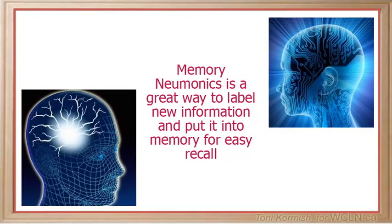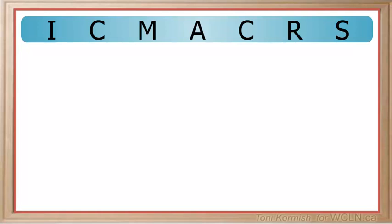First, we're going to start with a memory mnemonic system to help you remember the names of the major arteries and veins that you will need to know for this course. We're going to use ICEMAKERS for our memory mnemonic. Remembering that all of the major arteries we are studying here branch off the aorta, the first letter we're going to start with is the I in ICEMAKERS.